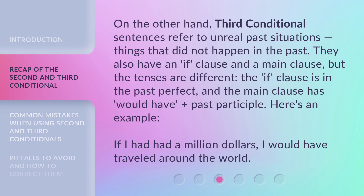On the other hand, third conditional sentences refer to unreal past situations — things that did not happen in the past. They also have an if clause and a main clause, but the tenses are different. The if clause is in the past perfect, and the main clause has 'would have' plus the past participle. Here's an example: 'If I had had a million dollars, I would have traveled around the world.'